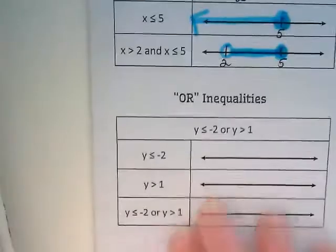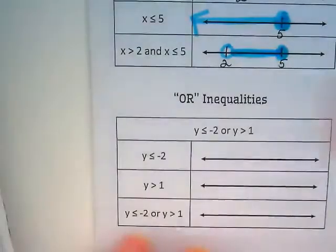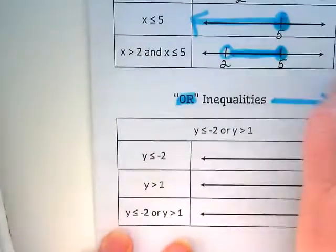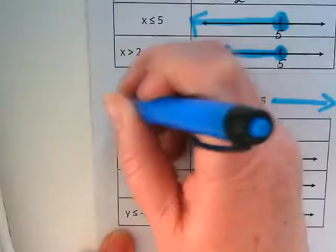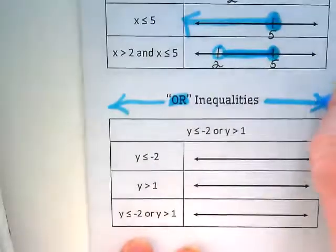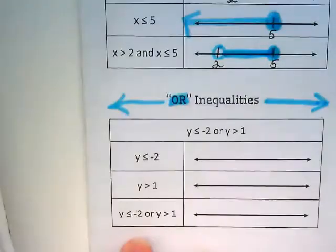So now let's try with the ors. We're going to do each part of the or first. And ors typically have arrows going off in separate directions where they don't meet. Although we have seen in some occasions they can overlap and go in the same direction.